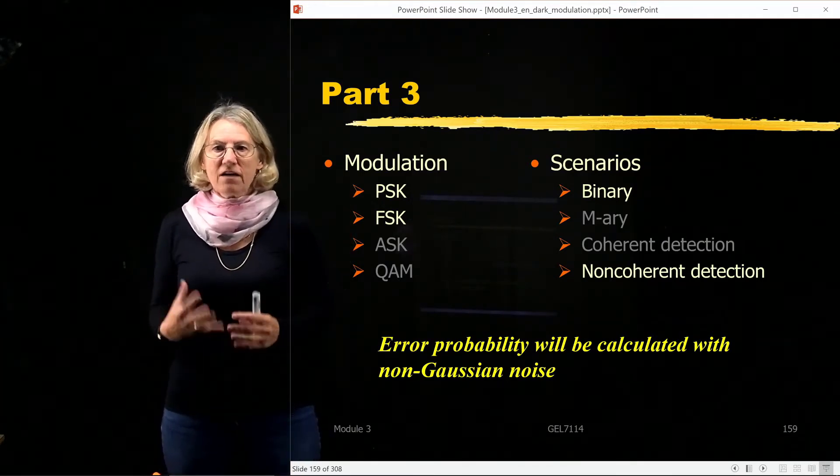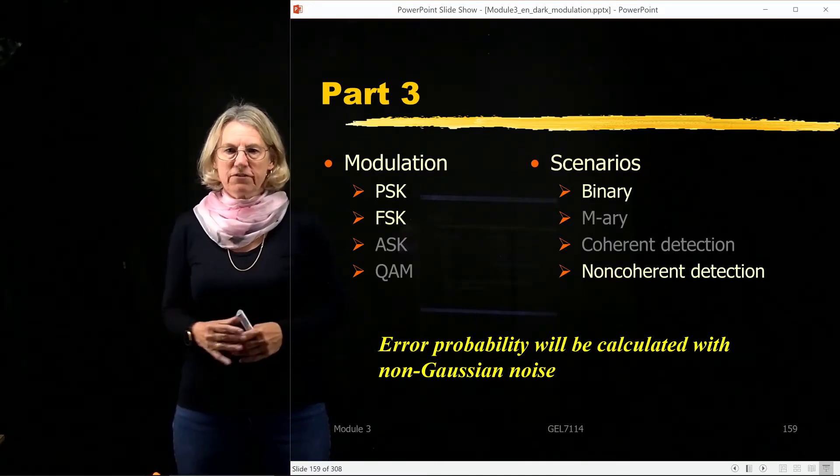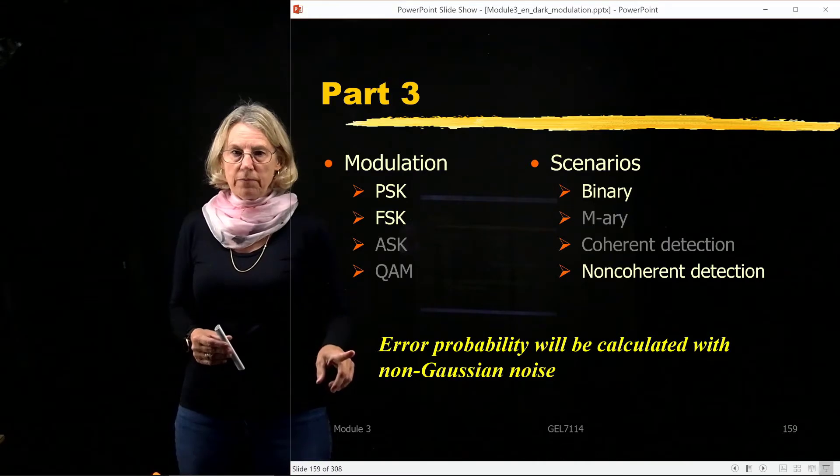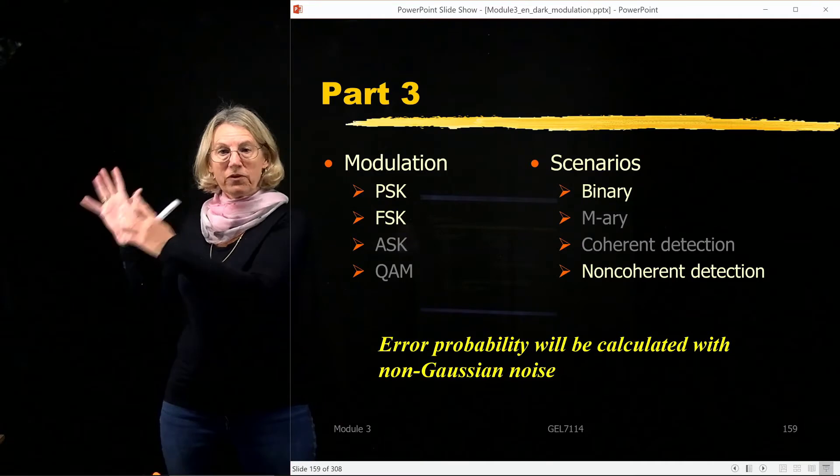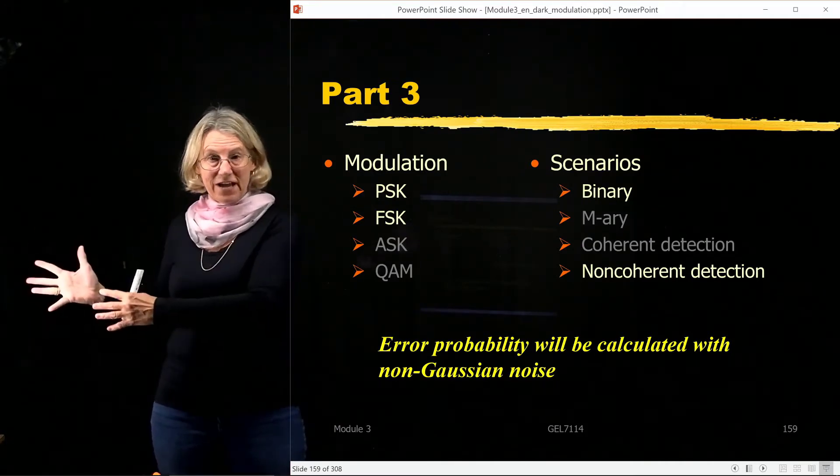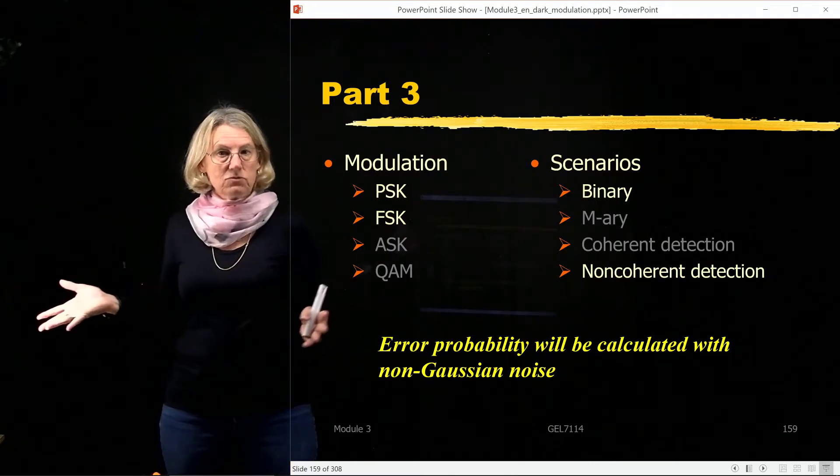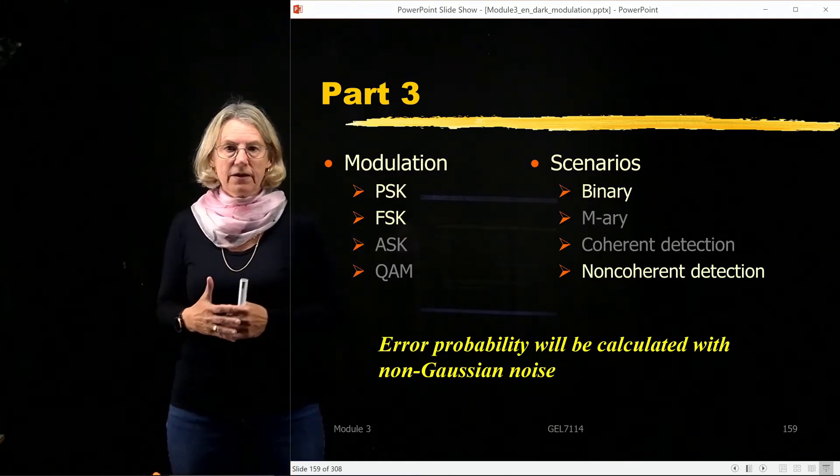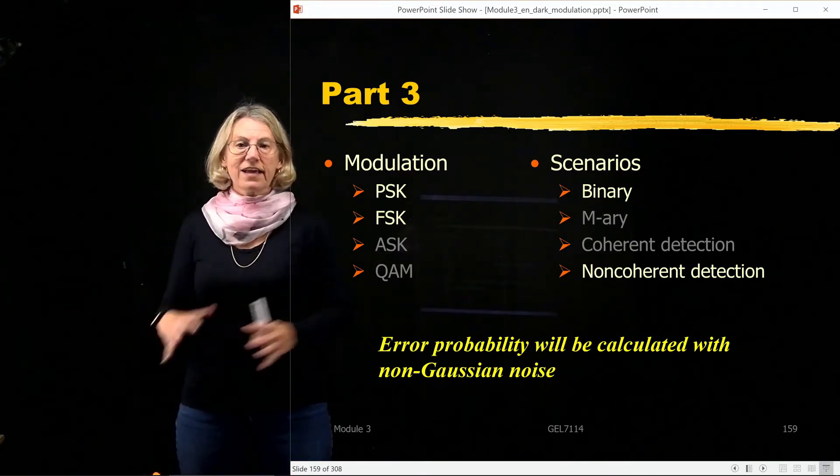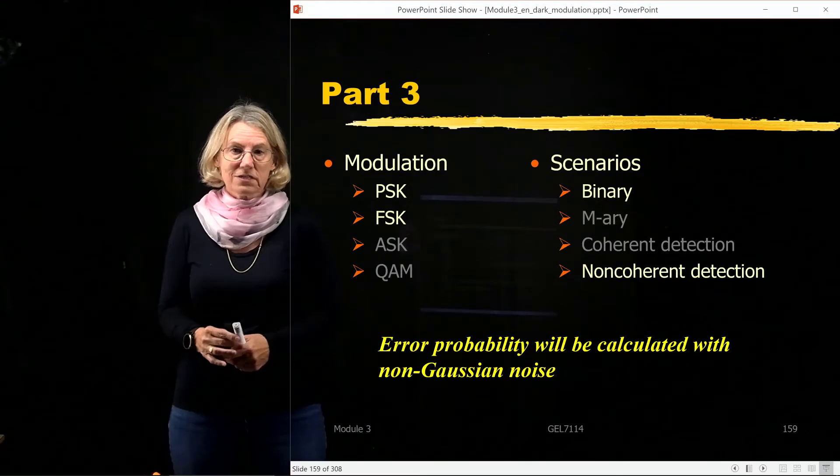But things get a little bit more complicated for non-coherent detection, and we're only going to look at the two binary, and we're only going to look at PSK and FSK. And because of the nature of the receivers that we're going to use, which are going to be different, we'll discover that the error probability will have to be calculated on non-Gaussian noise.